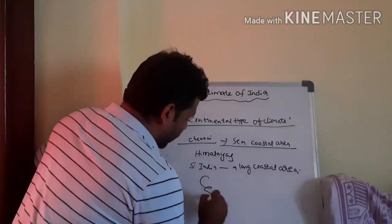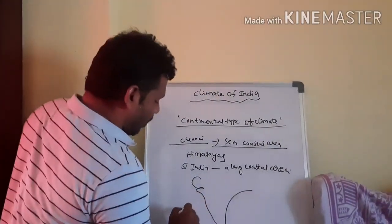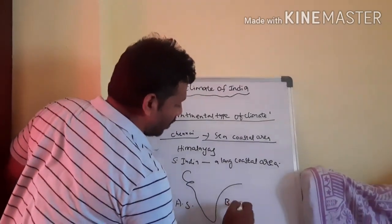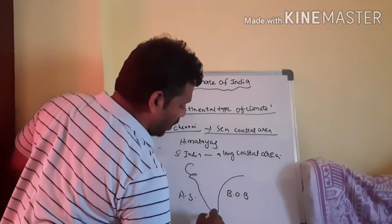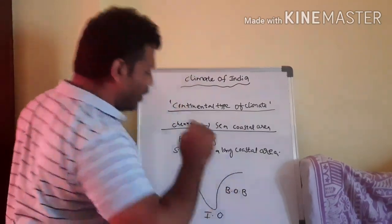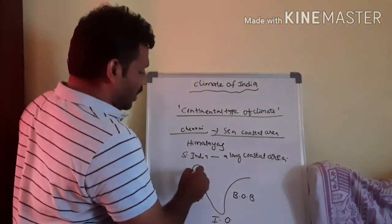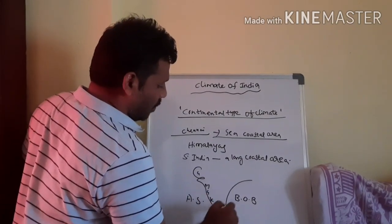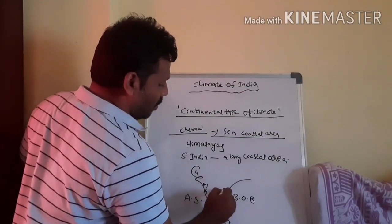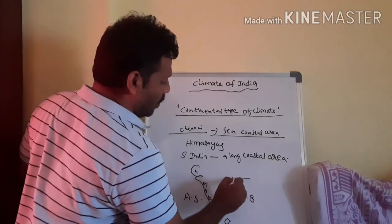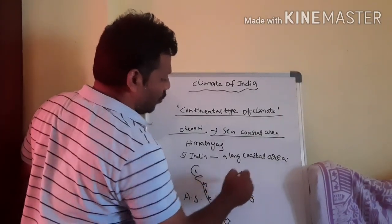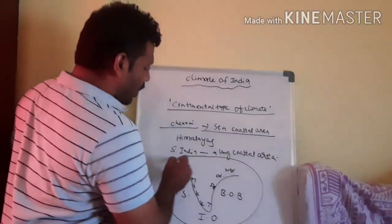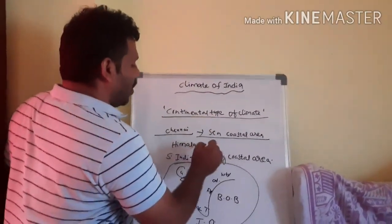Southern India is bounded by a long coastal area. Looking at the map, we find the Arabian Sea on the west, the Bay of Bengal on the east, and the Indian Ocean to the south. Gujarat, Maharashtra, Goa, Karnataka, Kerala, Tamil Nadu, Andhra Pradesh, Odisha, and West Bengal all have bonding with coastal areas, while North India is bounded by the Himalayas.